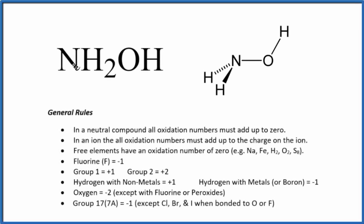To find the oxidation number for nitrogen in NH₂OH, we'll use these rules here. For NH₂OH, there's no negative or positive sign after it, so it's a neutral compound. All the oxidation numbers are going to add up to zero.